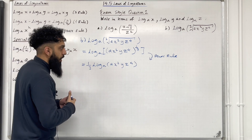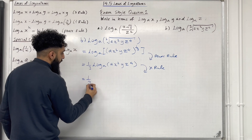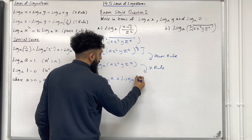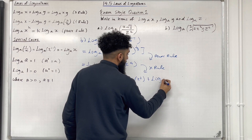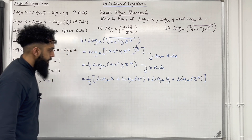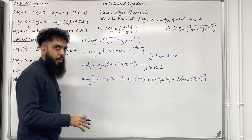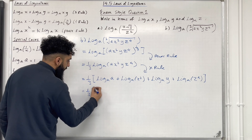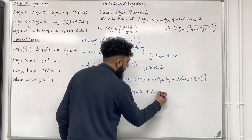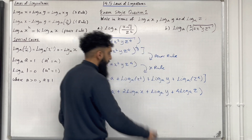Inside the logarithm, we have a product of 1, 2, 3, 4 terms, so we can split this as a sum of 4 logarithms using the multiplication rule. So we have equal a third times square bracket: log base A of A plus log base A of x squared plus log base A of y plus log base A of z to the power 4, close square bracket. Now I can apply the power rule on log base A of x squared and log base A of z to the power 4 to bring down the powers. So equal a third times: log base A of A plus 2 log base A of x plus log base A of y plus 4 log base A of z.